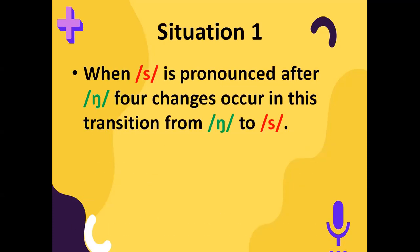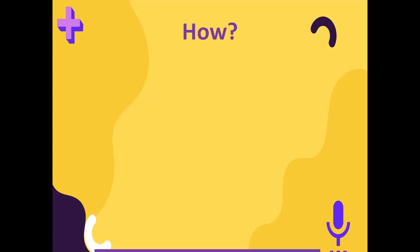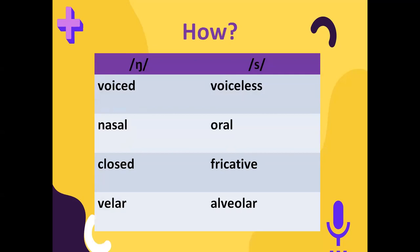It has three different situations. Situation one: when S is pronounced after N sound, four changes occur in this transition from N to S. N is a nasal sound and S is basically a voiceless fricative. N is a voiced sound whereas S is voiceless, and both sounds are not pronounced in the same way — both have different places of articulation.